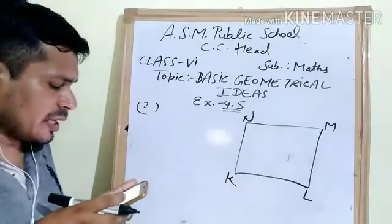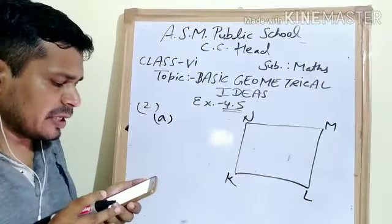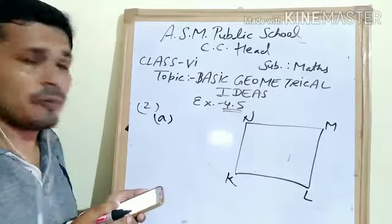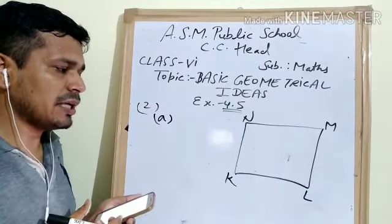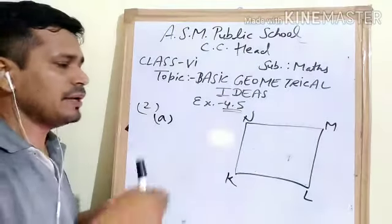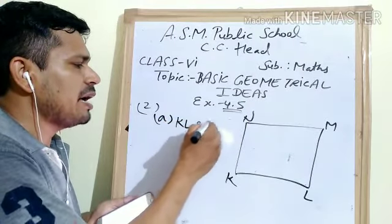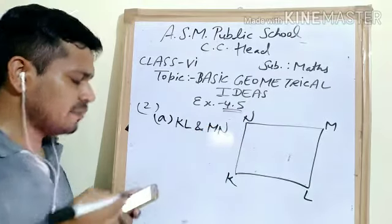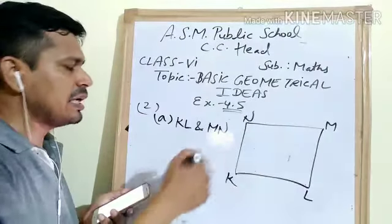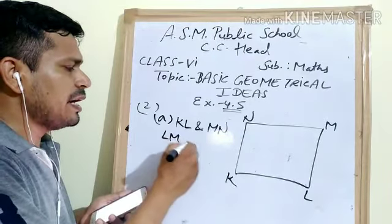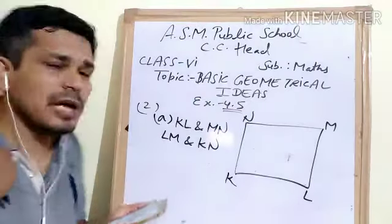After that, we are talking about two pairs of opposite sides. Opposite means we have two pairs of opposite sides to identify. In quadrilateral KLMN, KL and MN are one pair of opposite sides, and LM and NK are another pair of opposite sides. These are the opposite sides.